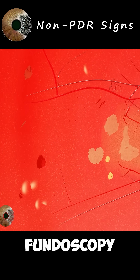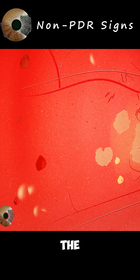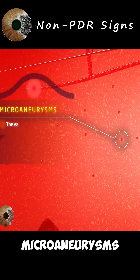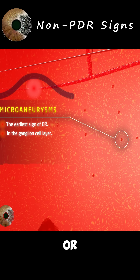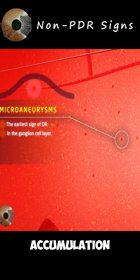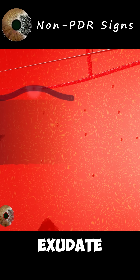They are seen during fundoscopy as tiny red dots, often temporal to the fovea. Microaneurysms are the earliest sign of diabetic retinopathy and may thrombose, or due to blood-retinal barrier breakdown, they may leak plasma over time.